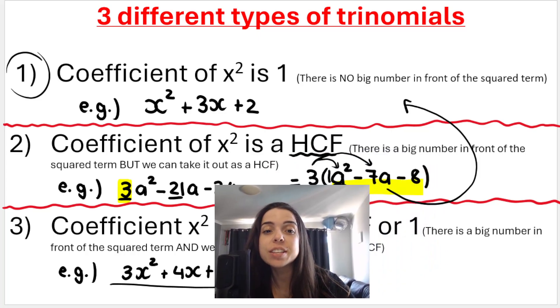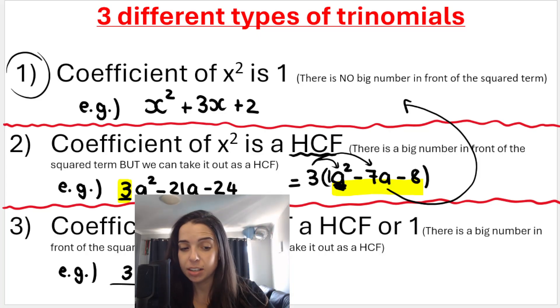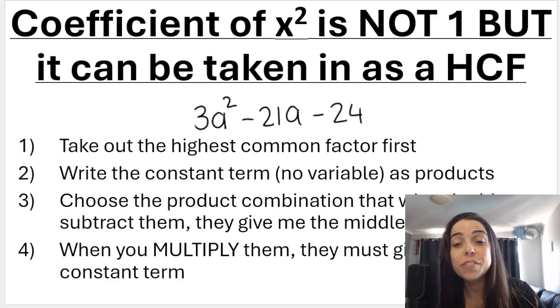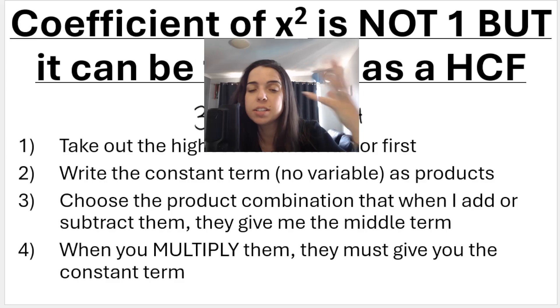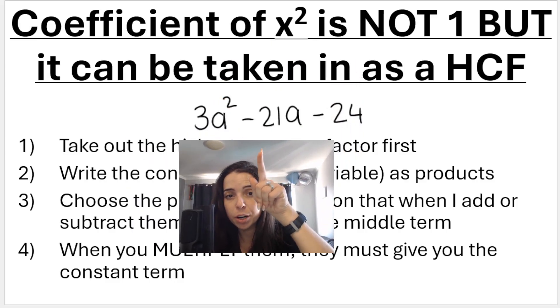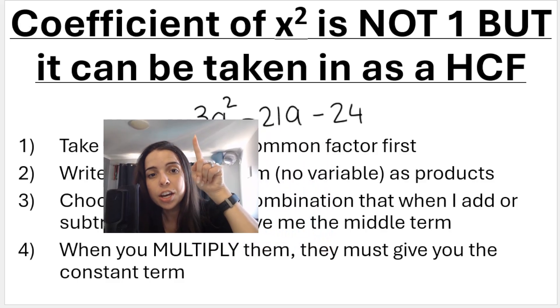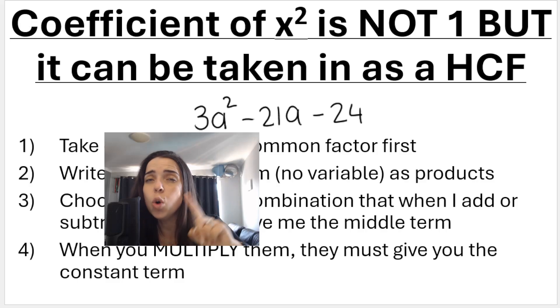In this video, we are going to look at the second type that I've listed here in my list, the second type of trinomial, where the coefficient of the squared term—now remember, I said x squared, but it doesn't have to be x squared, it can be a squared or y squared or whatever the variable is, in this case it's a squared—the coefficient, so the number in front, is not a 1, but it can be taken out as a highest common factor.